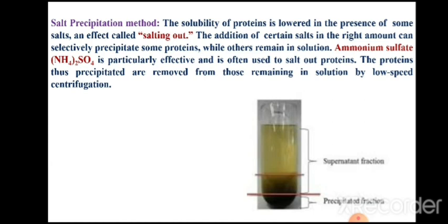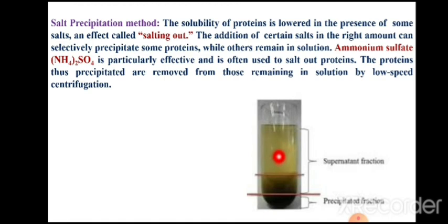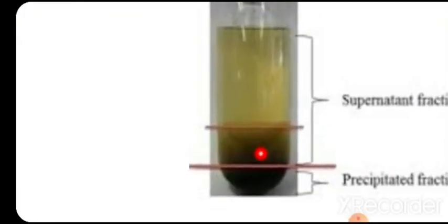This is the tube showing that ammonium sulphate is added slowly to the crude extract at a particular concentration. How much concentration is to be added will be described. After addition, the mixture is mixed, and you can see that the precipitate is formed, which is then separated by centrifugation.